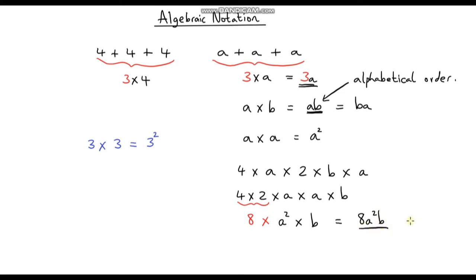We could also write this as 8ba², and these two things are exactly the same. But notice I've got b before a — that's not wrong, but it's not good practice to write b before a. We prefer alphabetical order.